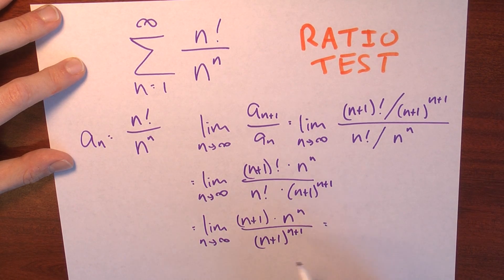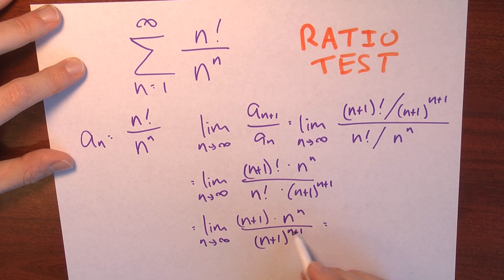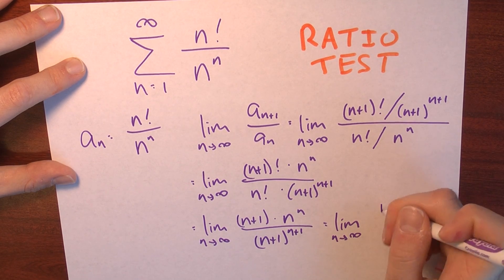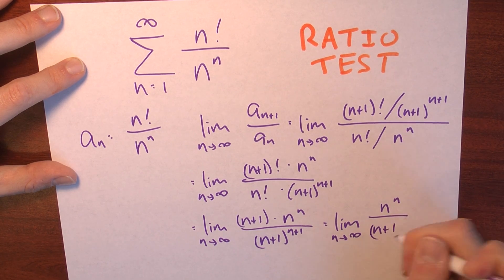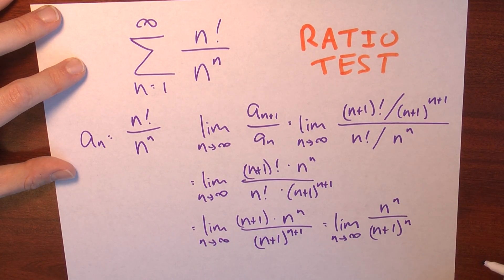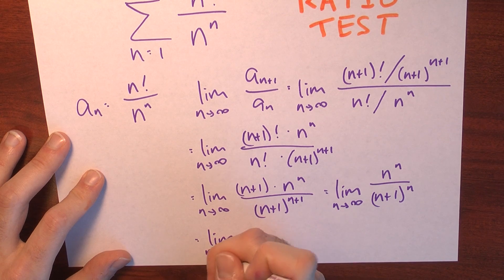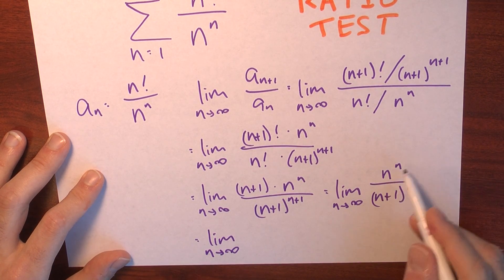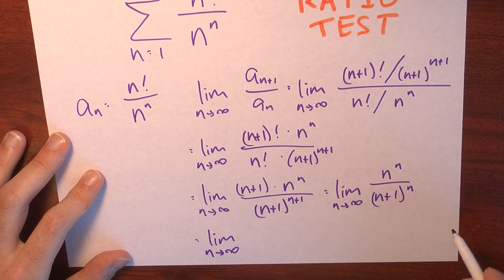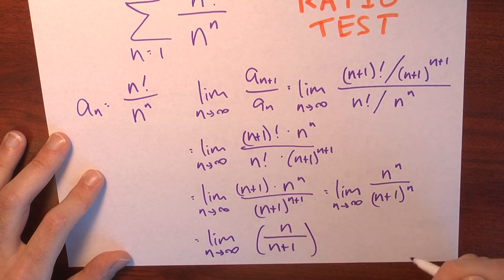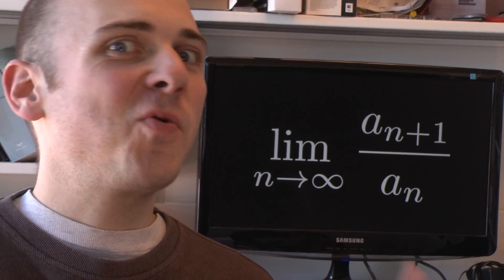I've got an (n+1) in the numerator and a power of (n+1) in the denominator, so I can cancel to change this to just an n-th power. This is the limit as n approaches infinity of n^n over (n+1)^n. And I could rewrite this as the limit as n approaches infinity of (n/(n+1))^n, by combining the numerator and denominator into a single base raised to the n-th power.